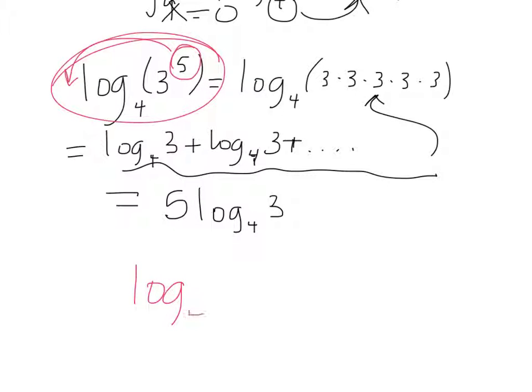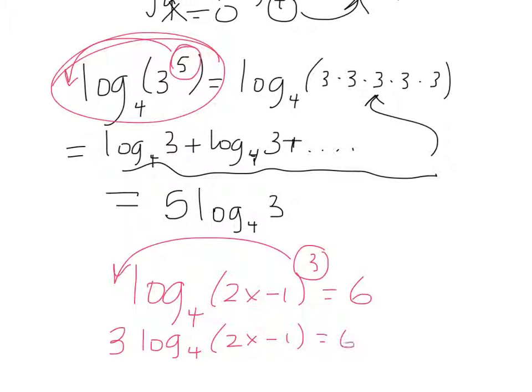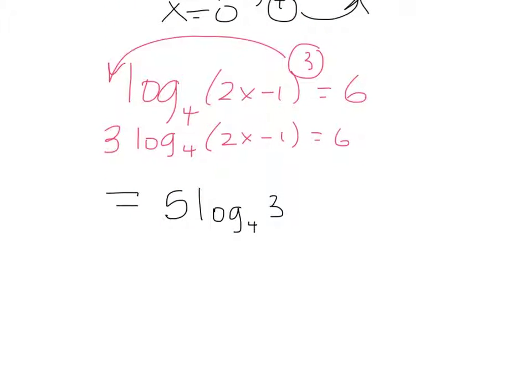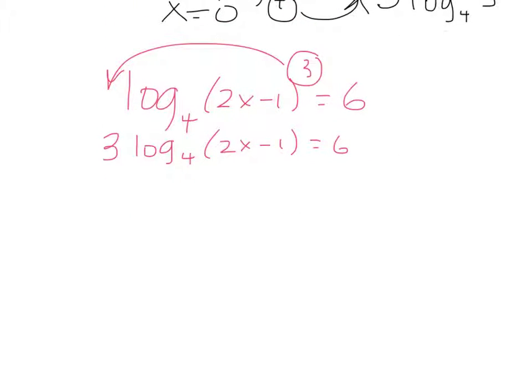So if you have log base 4 of 2x minus 1 cubed is equal to 6, you can easily do this without a calculator because you would take your 3 and you would pull it to the front. So you'd have 3 times log base 4 of 2x minus 1 is equal to 6. You could then divide by 3 everywhere.